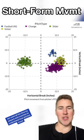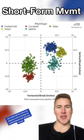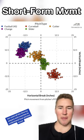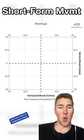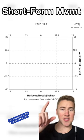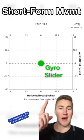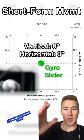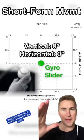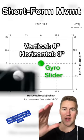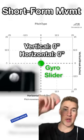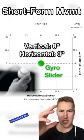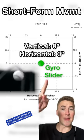Short-form movement plots are used all the time by players and coaches to understand how pitches move. If you want to understand them, you've got to start at the center of the plot. A gyroslider — it spins like a bullet, drops only because of gravity on its way to the plate. Zero inches vertical, zero inches horizontal.